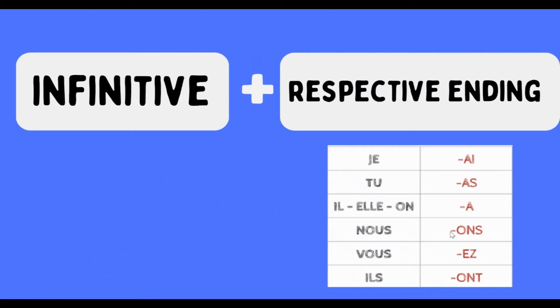For the future simple endings, it's very similar to the avoir present tense endings: je -ai, tu -as, il/elle/on -a, nous -ons, vous -ez, ils/elles -ont.